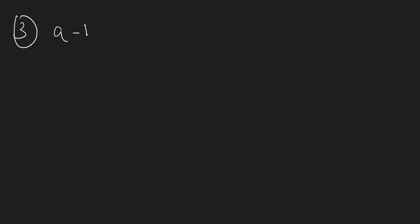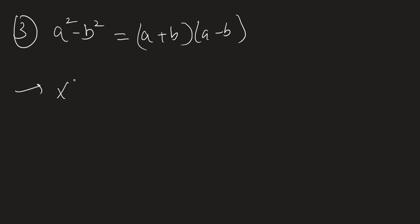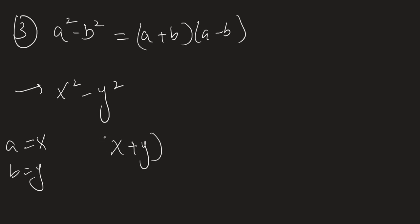Let's move on to the third identity: a squared minus b squared. For example, if we have x squared minus y squared, our a is x and our b is y. This opens up to a plus b times a minus b, which is x plus y times x minus y.